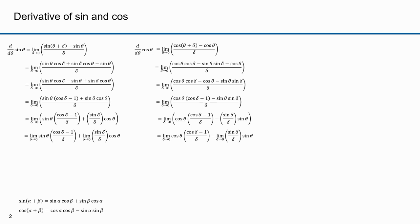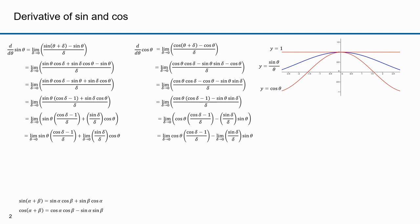I can express these now as separate limit functions. Now I need to determine the limit as delta approaches zero of cosine delta minus one over delta and sine delta over delta. Here's a plot of y equals one, y equals sine theta over theta, and y equals cosine theta. If I take the limit as theta approaches zero from the positive direction, you can see from the plot that all these equations approach one.